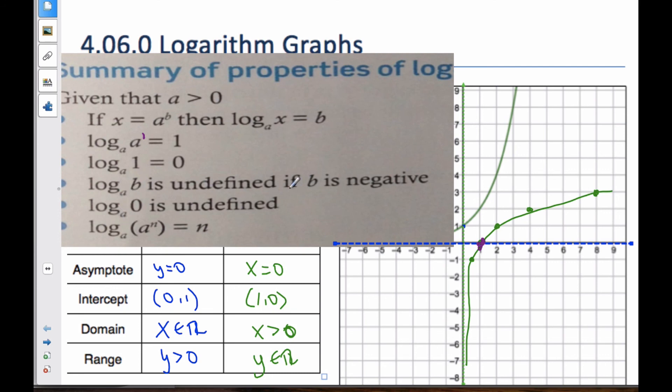If b is a negative value, it is undefined. The reason why that happens is because if I look here, there is nothing on this side of the function. There's an asymptote here, so all the function lives to the positive values. Log at zero is undefined, well, the same reason, that's where the asymptote is.